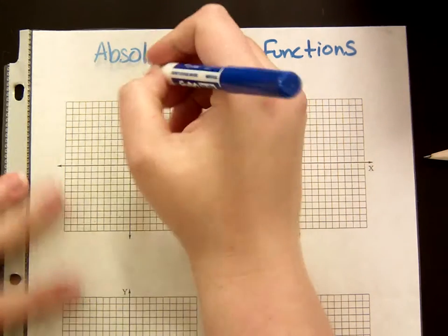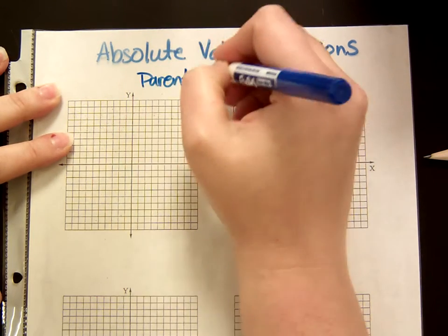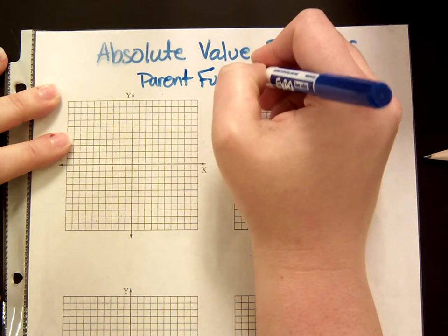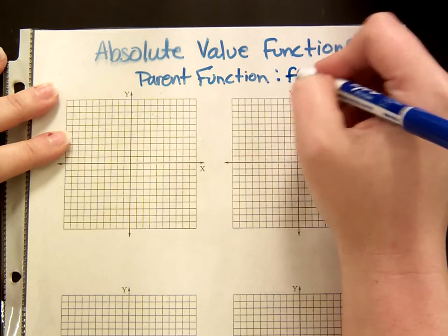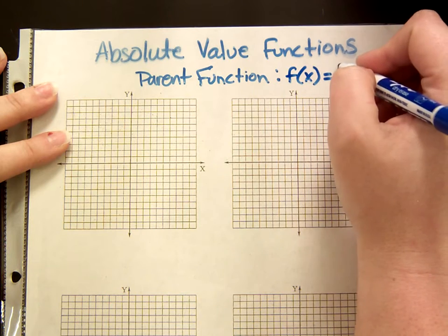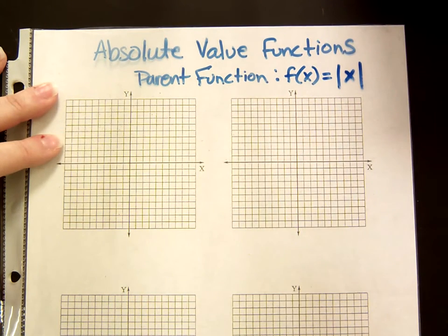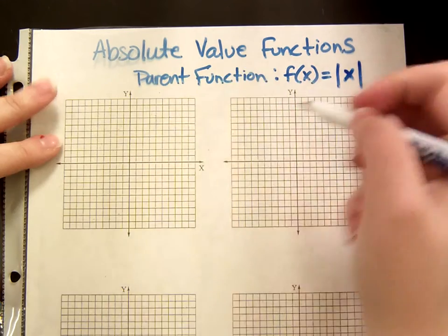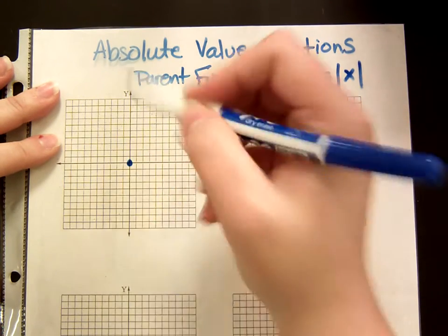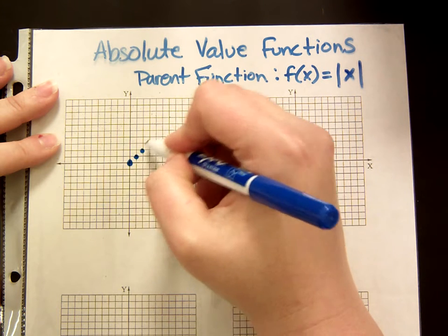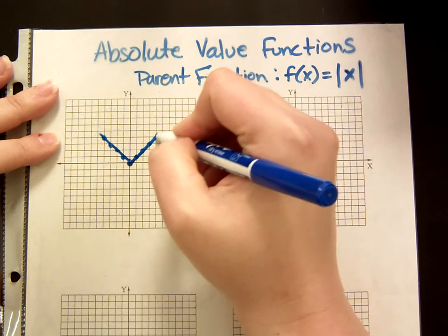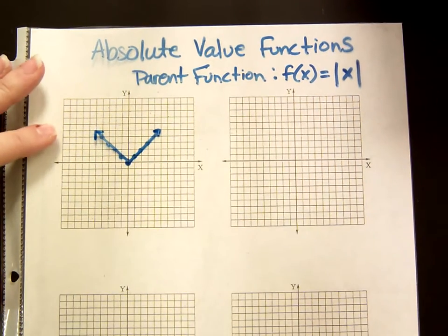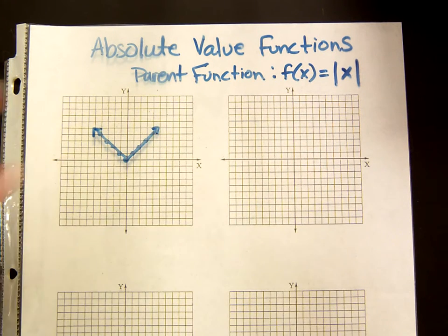First of all, let's talk about the parent function. Parent functions are your equation before you do anything to it. The parent function for an absolute value is just the absolute value of x. If you were to graph that, it looks like a V. On either side, we have a slope of positive and negative 1, and the vertex — which is your turning point — is at the origin.